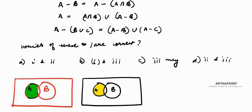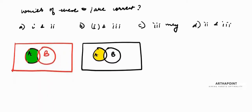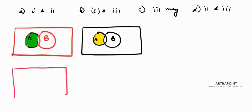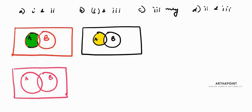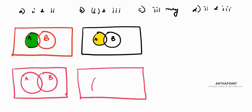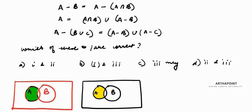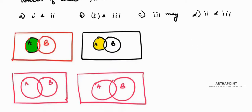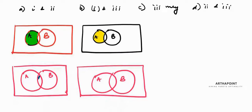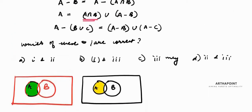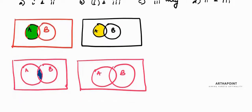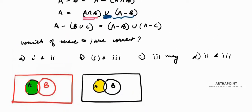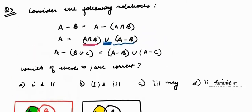Now let's look at relation 2. Drawing A and B again: A ∩ B is the intersection region, and A - B is A without the overlap. Since I am finding the union of A ∩ B and A - B, it gives me the complete set A. So relation 2 is also correct.